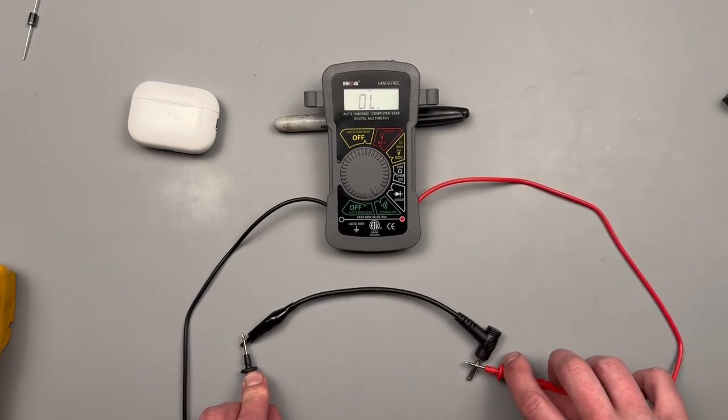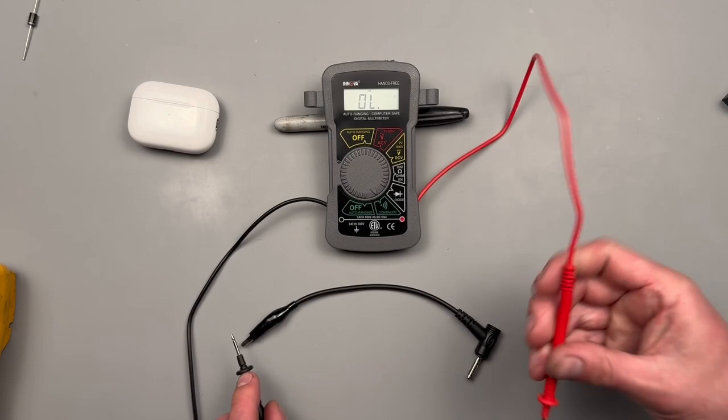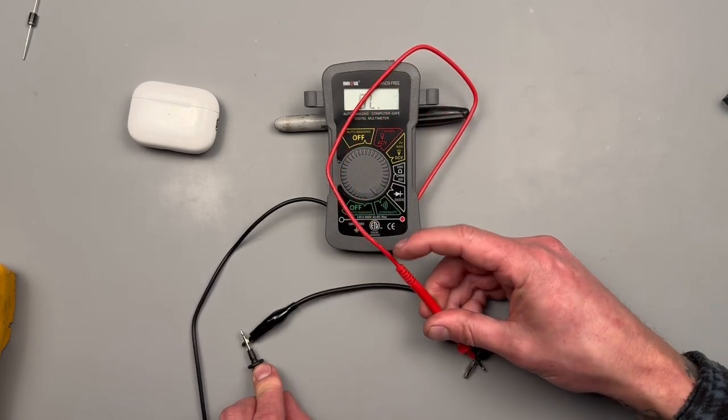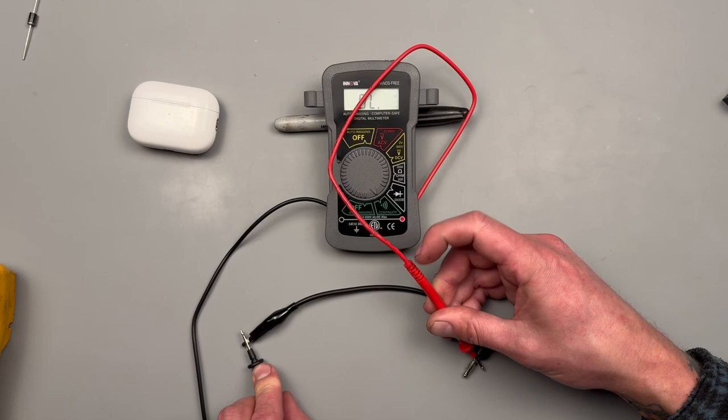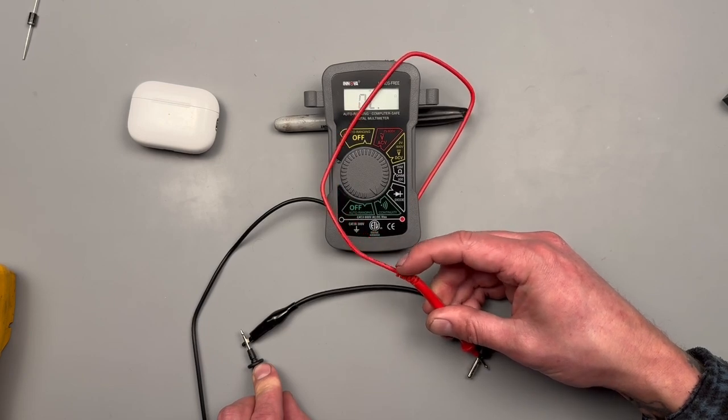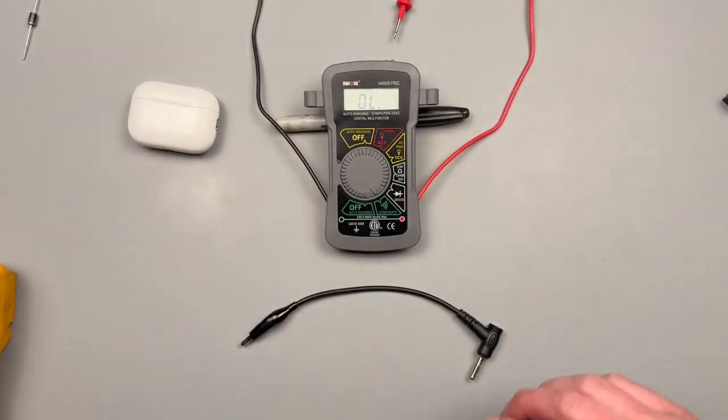Something that we want to look out for in a meter like this that can really throw you off if you're testing - hear how that tone is inconsistent? And if I mess with my test lead, I can get that tone to come on and off. That shouldn't be like that.